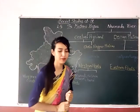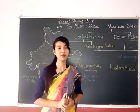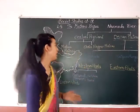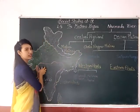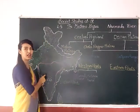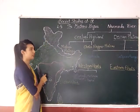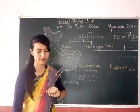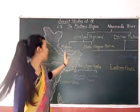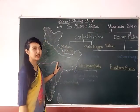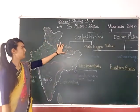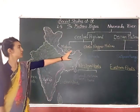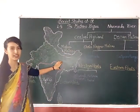The Malwa Plateau is surrounded by the Aravalli range. Now, the Narmada Plateau — we can see the Malwa Plateau surrounded by the Aravalli range.